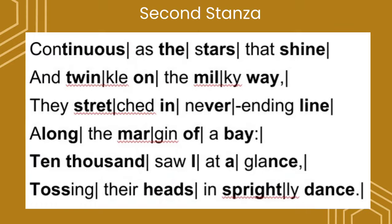In the second stanza of the poem, we can observe that the fifth line of this particular stanza is spondee, for the reason that it is stressed then followed also by stressed syllables. However, in the last line of this stanza it is trochee, for the reason that the word 'tossing' is the reverse from iambic — in trochee it is stressed then followed by unstressed.